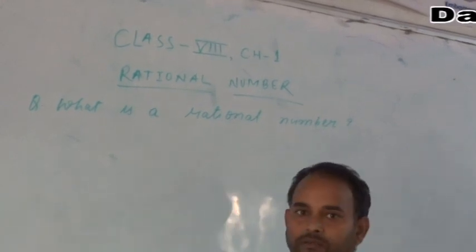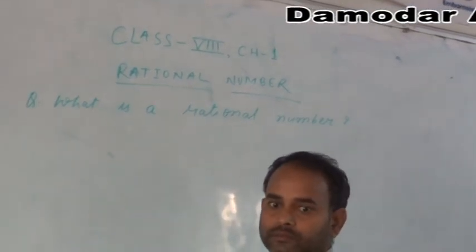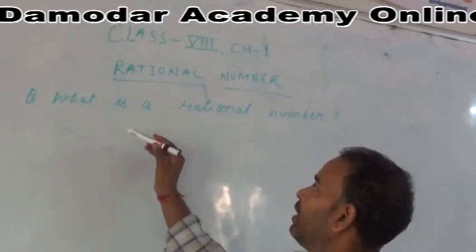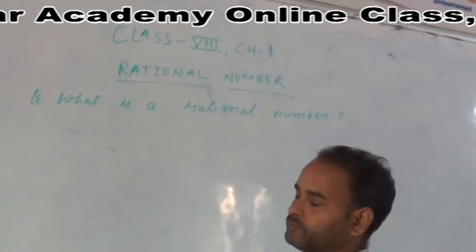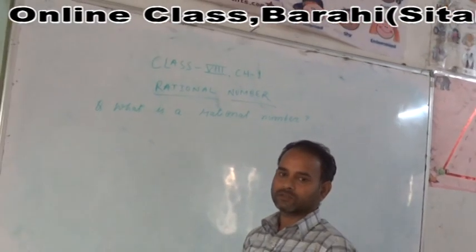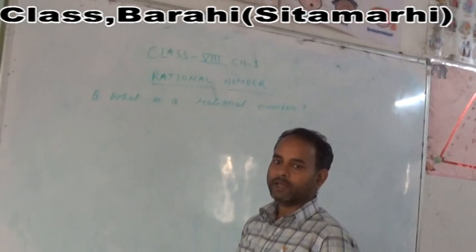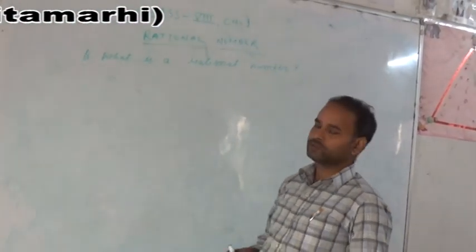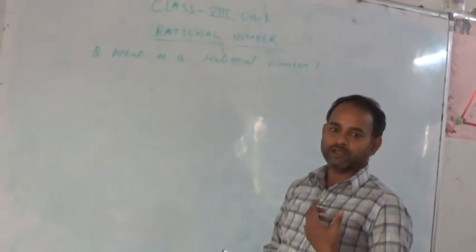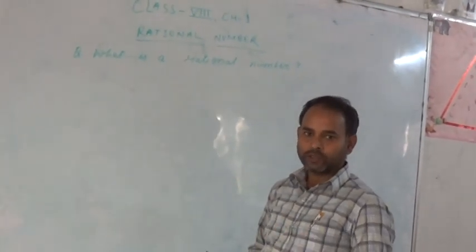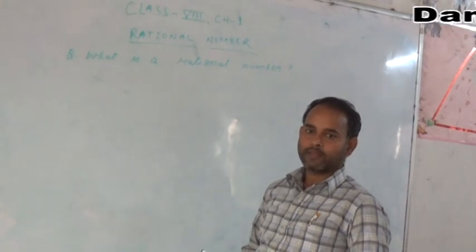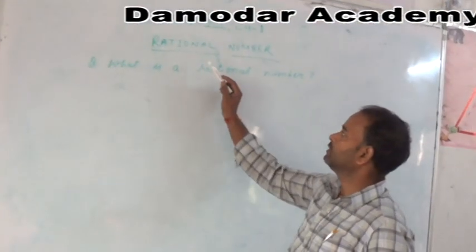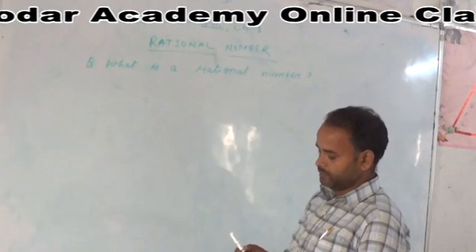The first question from this chapter is: what is a rational number? In previous class you have learnt about many numbers such as integers, natural numbers, whole numbers. But in class 8 we have to study about rational numbers. What is a rational number?